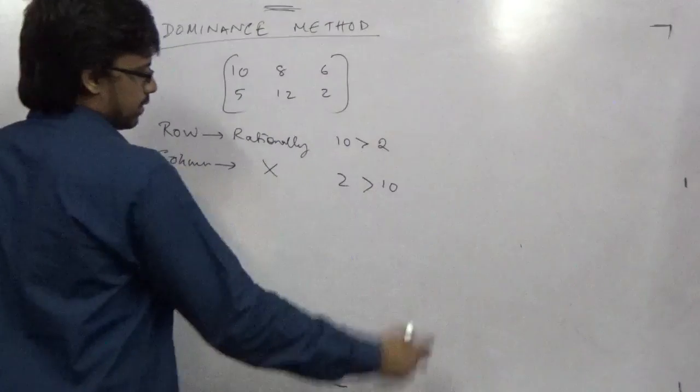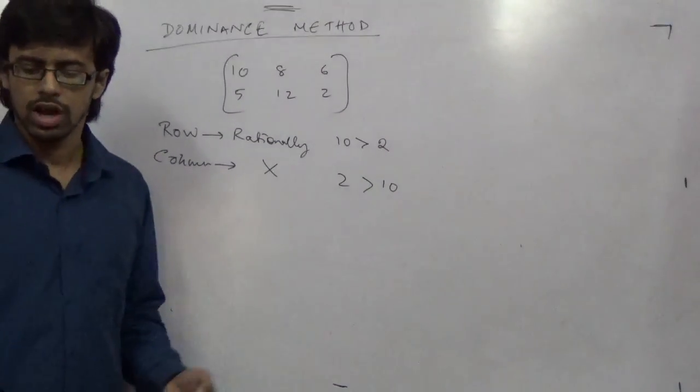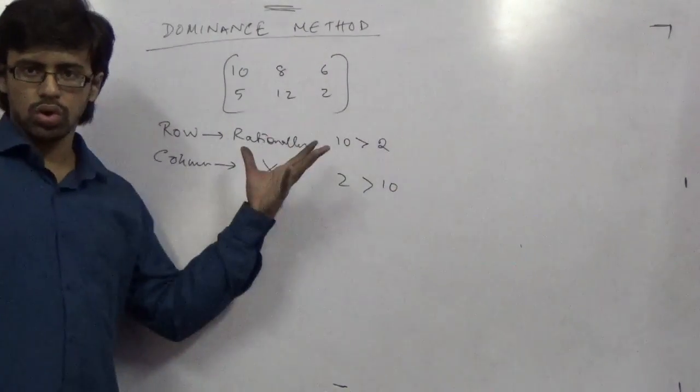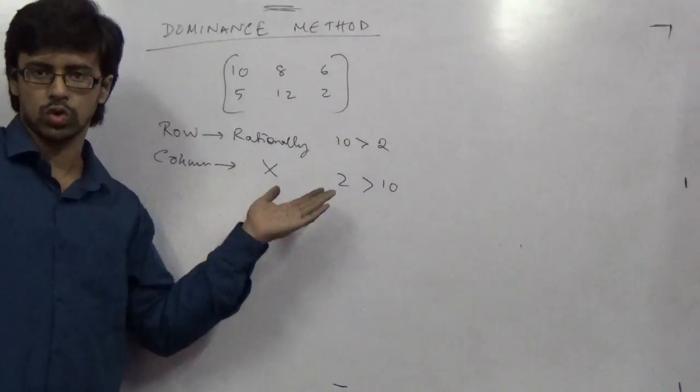Here 2 dominates 10. That is a simple structure. You can view in books, you can find many formulas, but this is the most crucial way. In row, bigger dominates the smaller. Whoever dominates, they exist, and the other part is gone, which I am going to show you in 10 seconds.